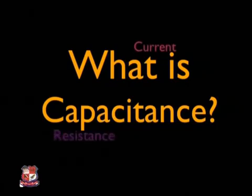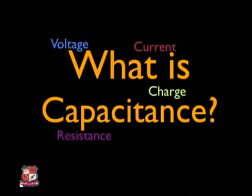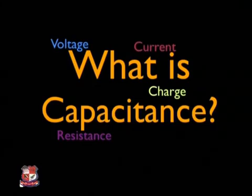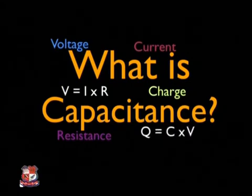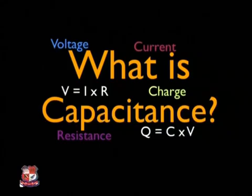Other important terms are current, resistance, voltage, and charge. A lot of times people are doing calculations and getting the right answers, but may not truly understand conceptually what these things are — like what is current, what is charge, what is capacitance. Especially when we're doing equations using Ohm's law — V equals I times R, voltage equals current times resistance — or the capacitor equation: Q equals C times V, which means charge equals capacitance times voltage.